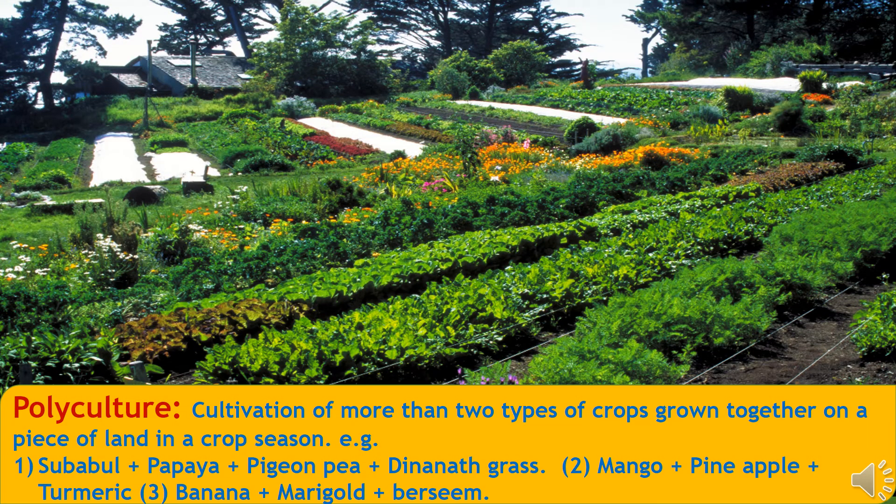Polyculture means cultivation of more than two types of crops grown together on a piece of land in a crop season. Like growing subabool plus papaya plus pigeon pea plus dinanath grass, and a second example is mango plus pineapple plus turmeric, and a third example like banana plus marigold plus berseem. In this system we are growing multiple crops to get maximum benefits and minimizing the risks.